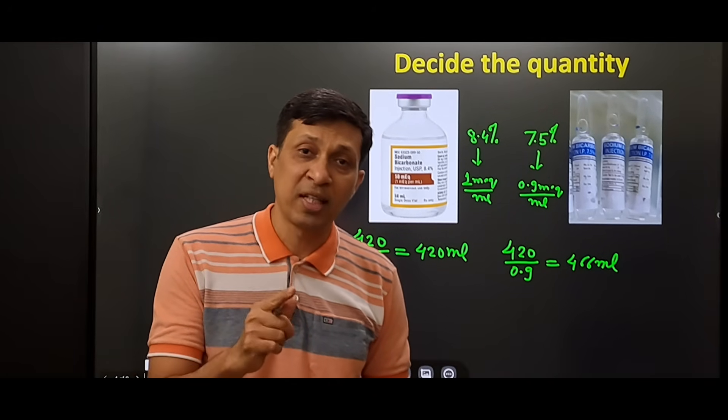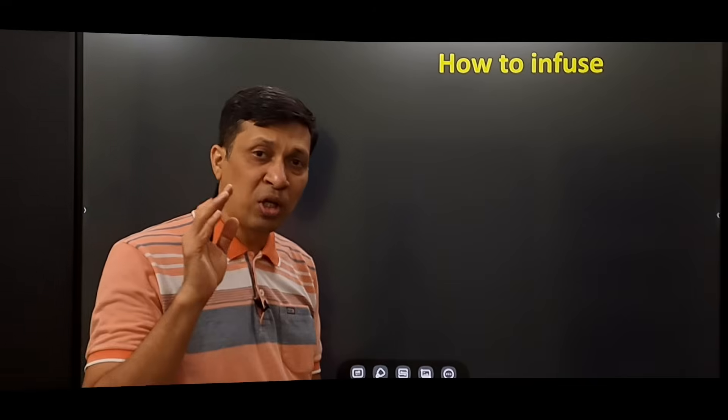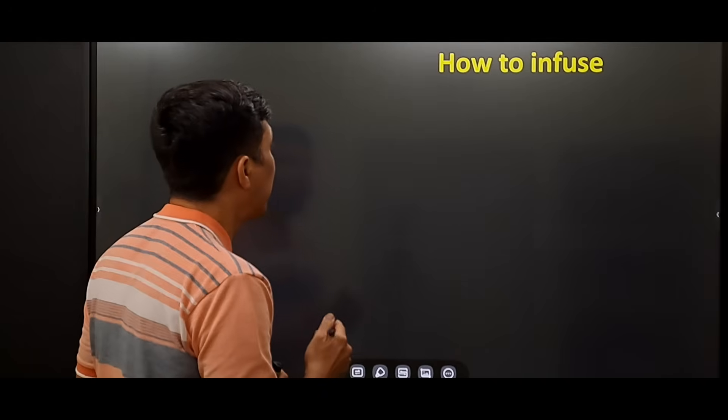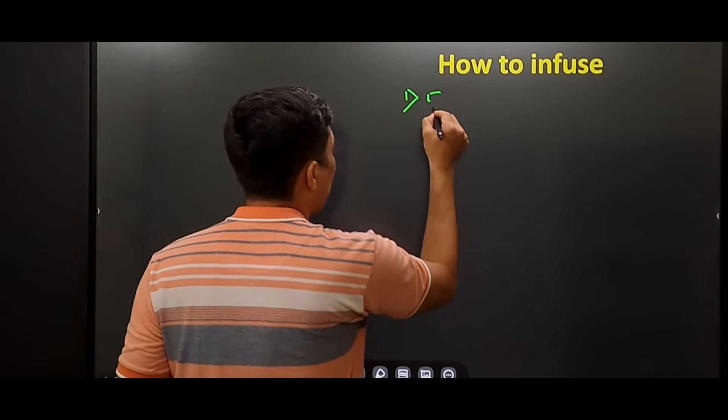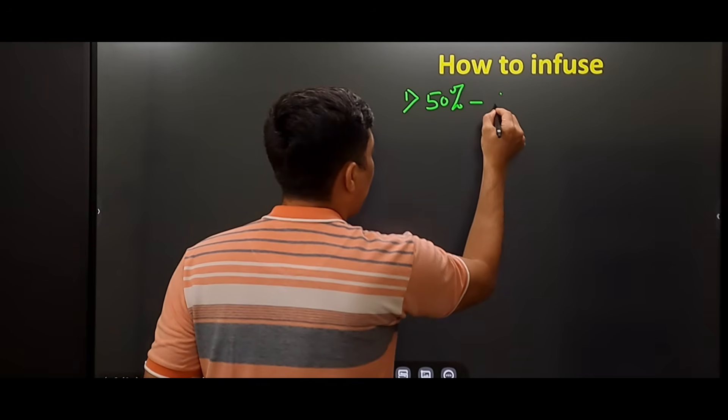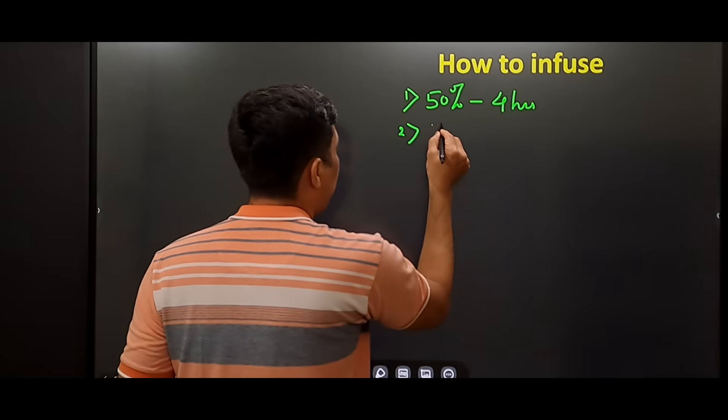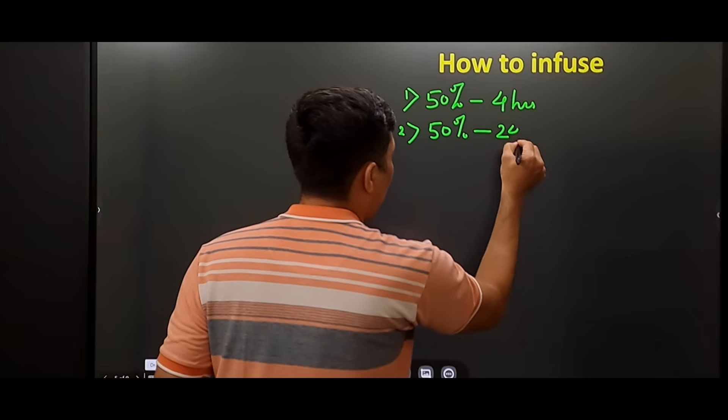Now we go to our third step, which is how to actually infuse this drug to the patient. Whatever quantity of drug we have to give, we have to divide it into two parts. In the first part, we have to give 50% of drug in 4 hours, and the remaining 50% we have to give in 24 hours.